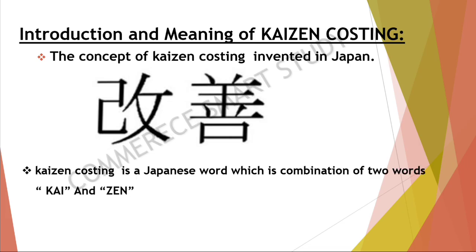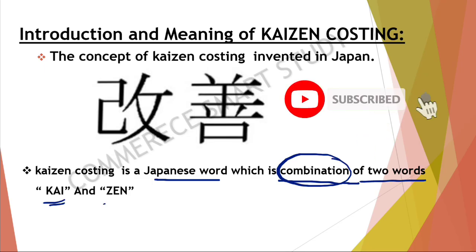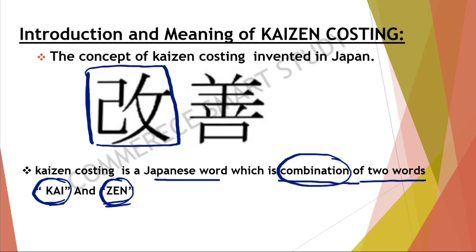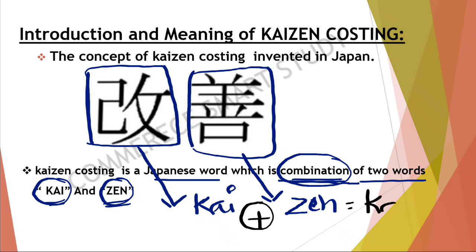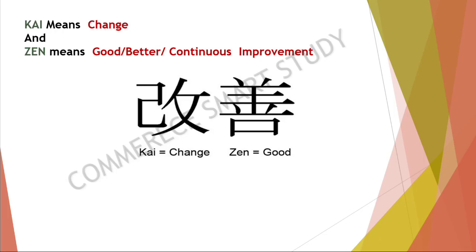Kaizen is a Japanese word which is a combination of two words. The first word is 'Kai' and the second word is 'Zen'. These two words combine to form 'Kaizen'. So Kai and Zen together make the word Kaizen.